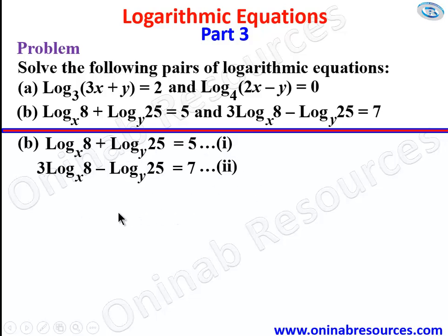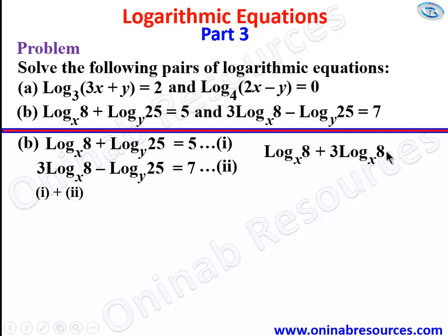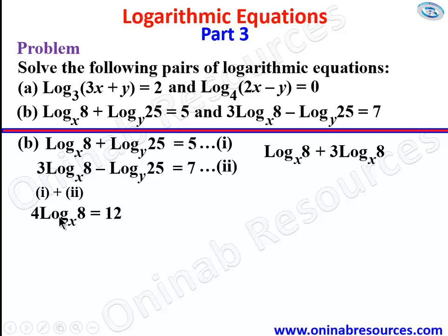This is a pair of simultaneous equations. Since both equations contain log 25 base y with only different signs, we add equation 1 plus equation 2. Adding corresponding terms: log 8 base x plus 3 log 8 base x is 4 log 8 base x — just like m plus 3m equals 4m. Log 25 base y minus log 25 base y is 0. So 5 plus 7 gives 12, and dividing both sides by 4, we get log 8 base x equals 3.